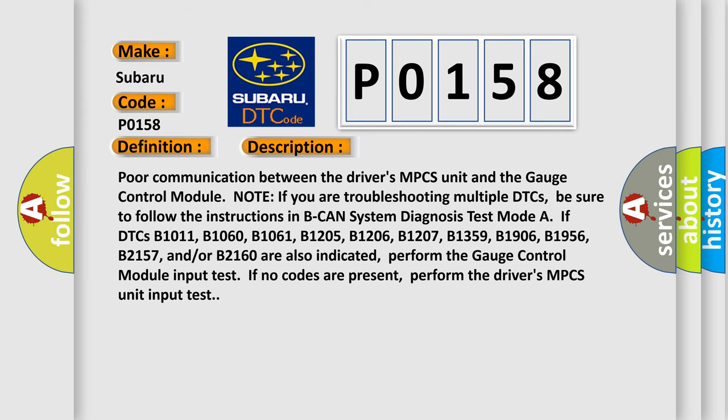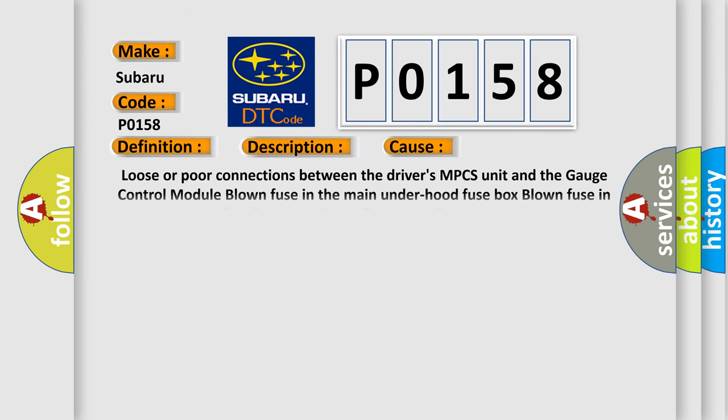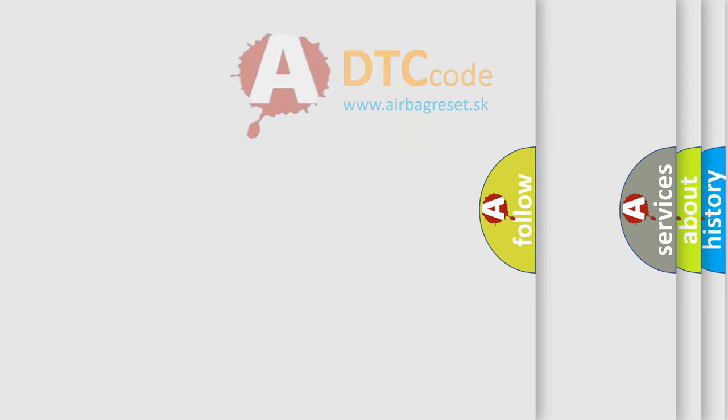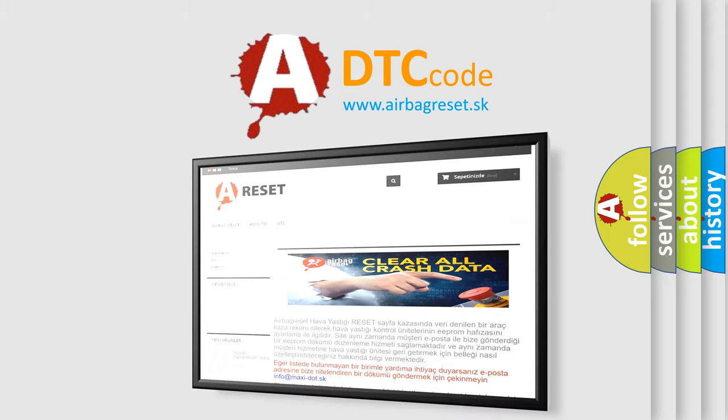This diagnostic error occurs most often in these cases: loose or poor connections between the driver's MPCS unit and the gauge control module; blown fuse in the main under-hood fuse box; blown fuse in the under-dash fuse or relay box; open or short condition between the driver's MPCS unit and the gauge control module; faulty gauge control module; or faulty driver's MPCS unit. The Airbag Reset website aims to provide information in 52 languages. Thank you for your attention.